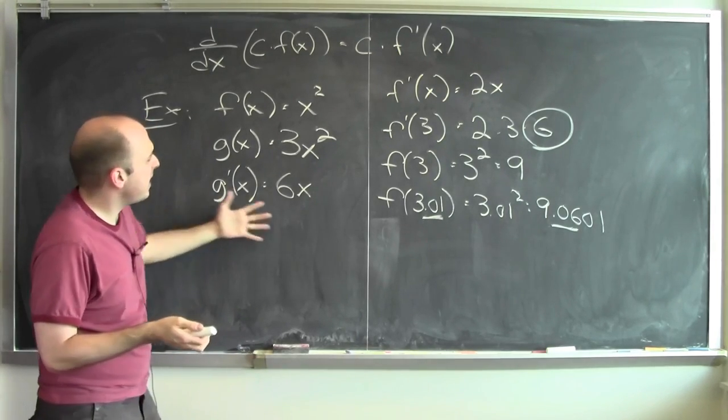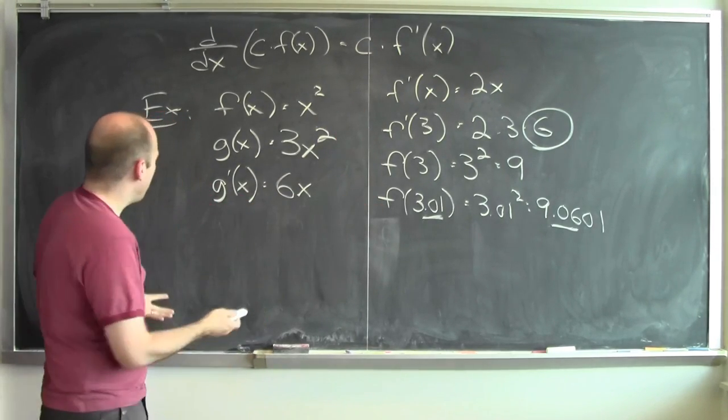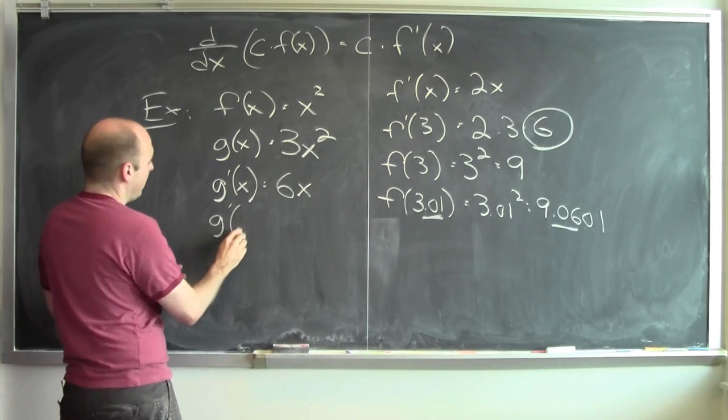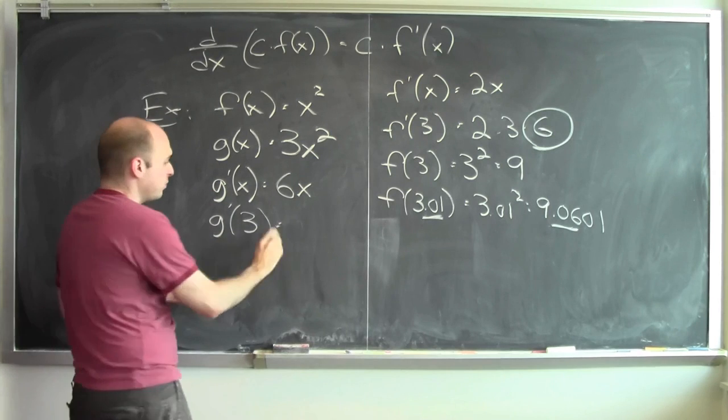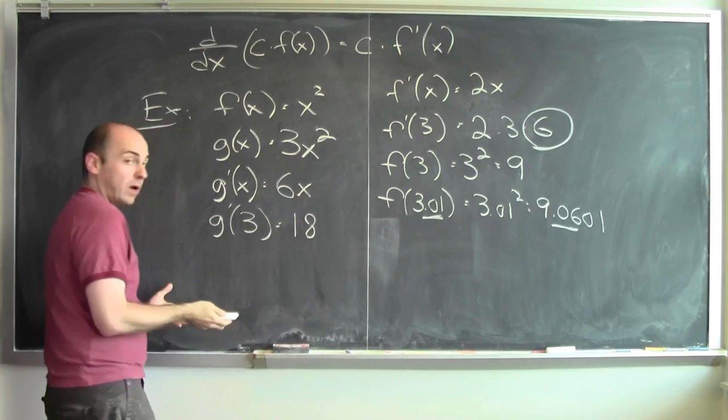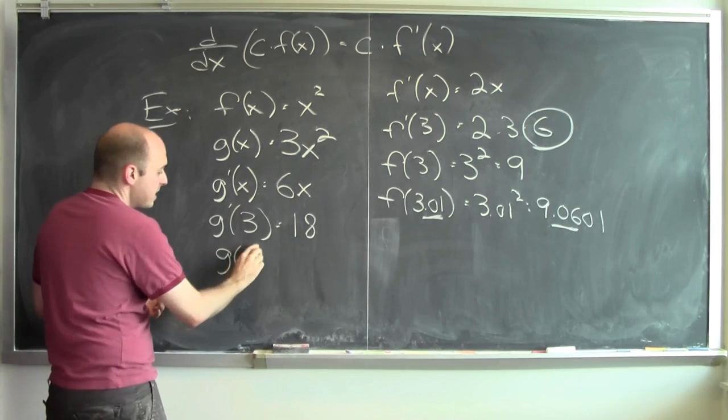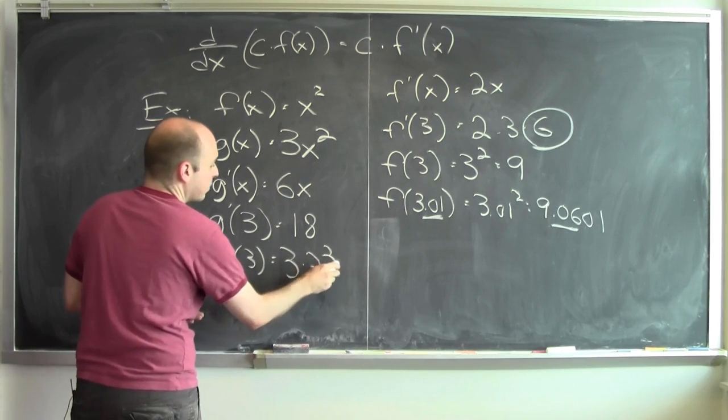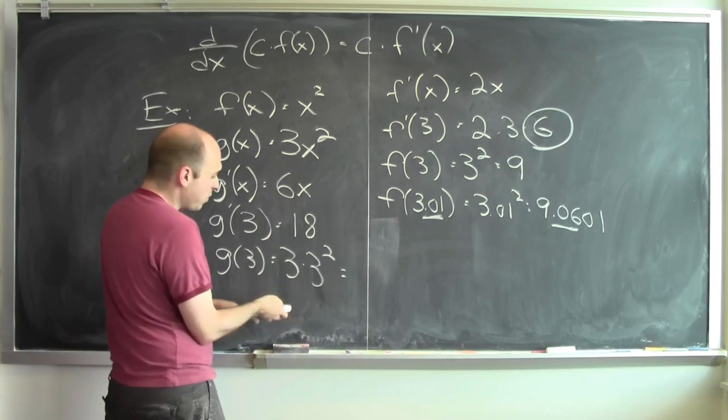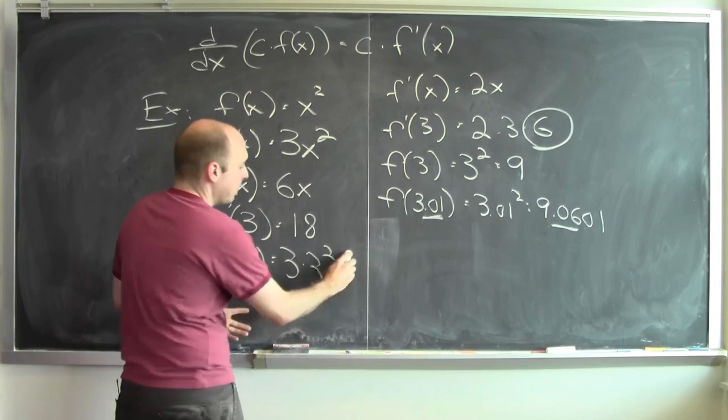Well, let's take a look at the same kind of deal as we did over here. I can take a look at a specific value, like I can plug in 3. And when I plug in 3 into this derivative, I get 18. If I plug just 3 into this function, that's 3 times 3 squared. Well, 3 times 3 squared, that's 3 times 9, that's 27.